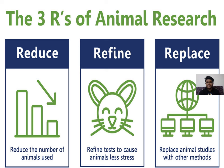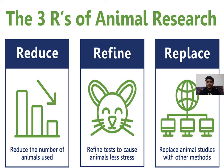The three R's of animal research are Reduce, Refine, and Replace. Reducing the number of animals used — if fewer are needed, it's better to reduce the number. Refining the process — adopt non-invasive methods so that least harm is caused. Replace — if possible, replace in vivo studies with in vitro, ex vivo, or in silico using computer software and algorithms based on AI.